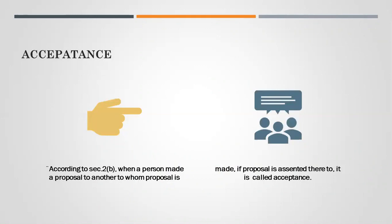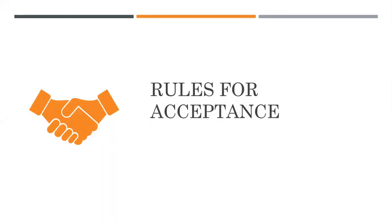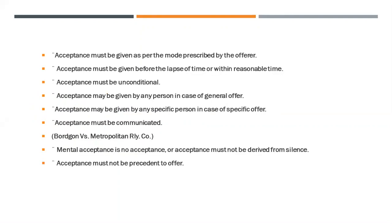The second one is acceptance. According to Section 2b, when a proposal is made to another person and that person assents thereto, it is called acceptance — meaning accepting a proposal. If A has offered B to do a business and B has accepted, that is acceptance. There are certain rules for acceptance: acceptance must be given as per the mode prescribed by the offeror. The way Mr. A wants his business to be accepted — in a certain format, in certain writing, or on a stamp paper — B has to respond in the same way.